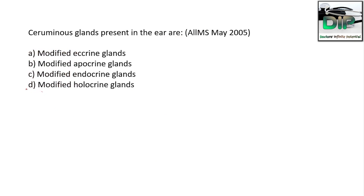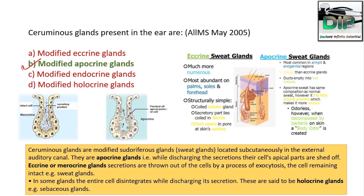Next question: The ceruminous glands present in the ear are — Option A, modified eccrine gland; Option B, modified apocrine gland; Option C, modified endocrine glands; Option D, modified holocrine glands. The correct answer is modified apocrine glands.